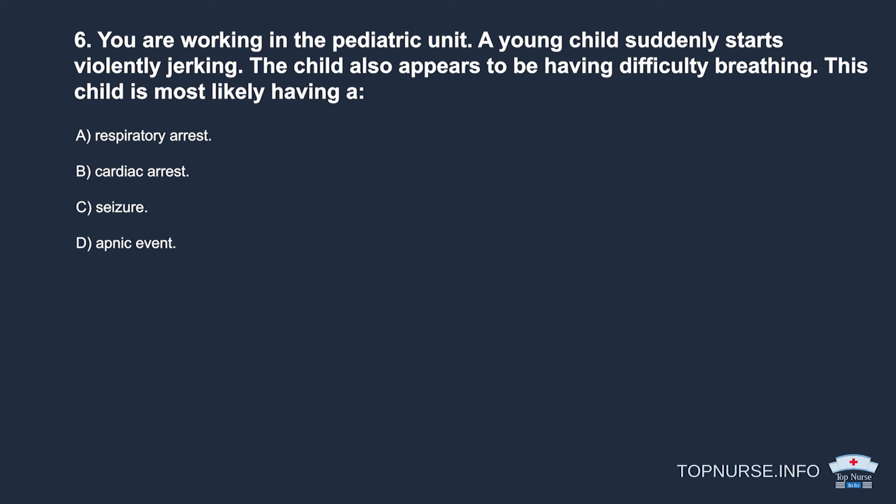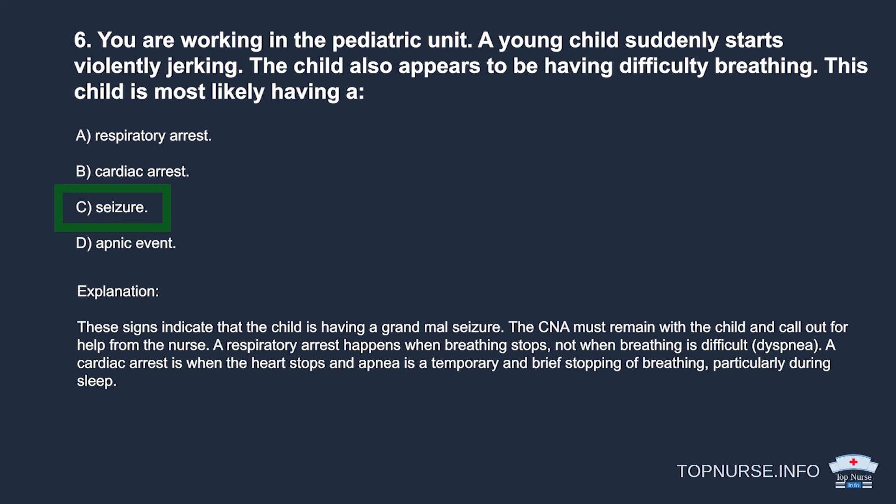Question 6: You are working in the pediatric unit. A young child suddenly starts violently jerking and appears to be having difficulty breathing. This child is most likely having: a. Respiratory arrest. b. Cardiac arrest. c. Seizure. d. Apneic event. Correct answer: c. Seizure. These signs indicate the child is having a grand mal seizure. The CNA must remain with the child and call out for help from the nurse. A respiratory arrest happens when breathing stops, not when breathing is difficult. A cardiac arrest is when the heart stops, and apnea is a temporary stopping of breathing, particularly during sleep.